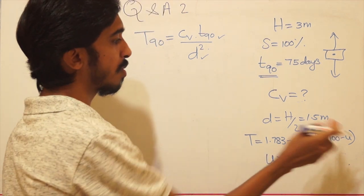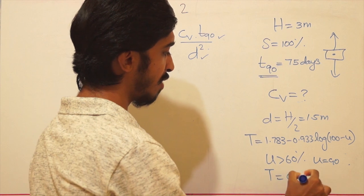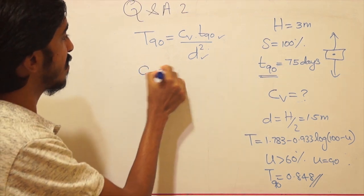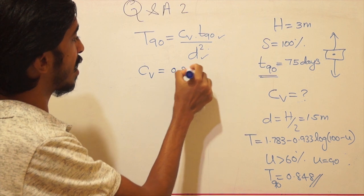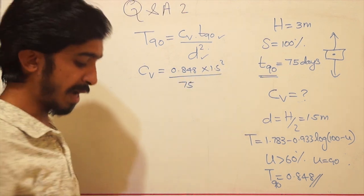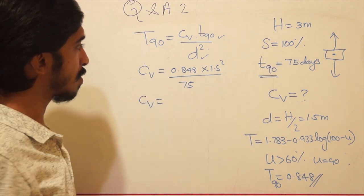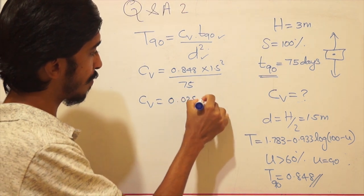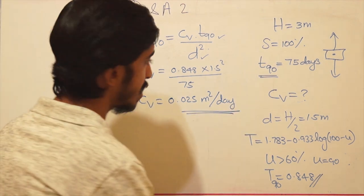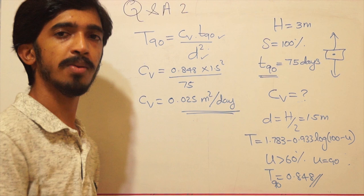Substituting U = 90% gives T90 = 0.848. Then cv = T90 × d² / t90 = 0.848 × 1.5² / 75 = 0.025 m²/day. This is the coefficient of consolidation for this particular loading range. Note that if the load changes, cv can also change.